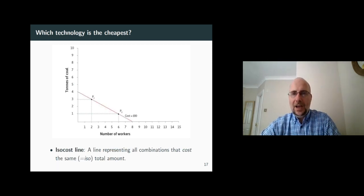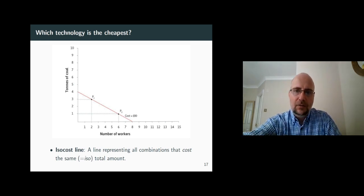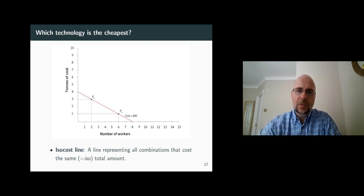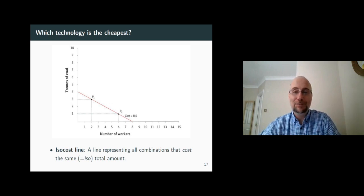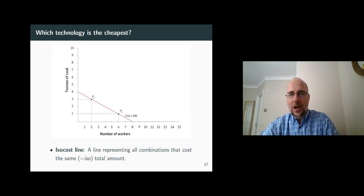We can populate the entire graph with many points like the ones above, which have a special property. All combinations of inputs on that line lead to exactly the same total costs. This is why we call this line an ISO cost line. From ISO, which means the same, and costs, which is, well, costs. So an ISO cost line is a line representing exactly the same costs for the firm, no matter how you combine the inputs on that line.